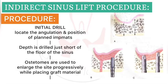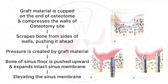In indirect sinus lift, an initial drill locates the angulation and position of the implant. Depth is drilled just short of the floor of the maxillary sinus. Osteotomes progressively enlarge the site by placing graft material at the osteotomy site. The osteotome scrapes bone from the sides of the wall, pushing it ahead — creating pressure that elevates the sinus floor and sinus membrane upward. The graft placed will convert to bone.